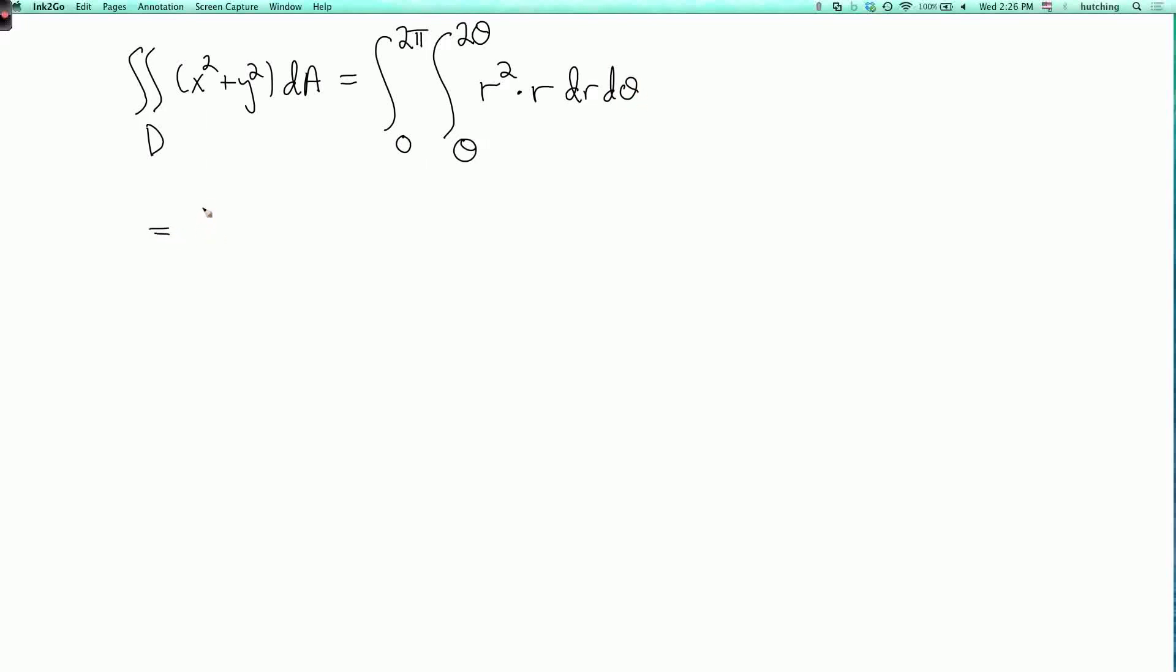So this is pretty easy to evaluate. The r integral, the integral of r cubed is r to the fourth over 4, evaluated at r equals 2 theta and r equals theta, and then d theta. So this is the integral from 0 to 2 pi of 2 theta to the 4 over 4 minus theta to the 4 over 4 d theta.